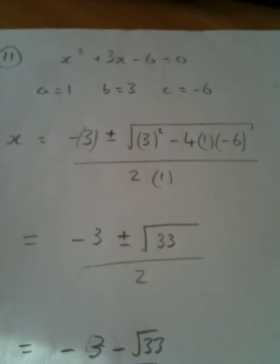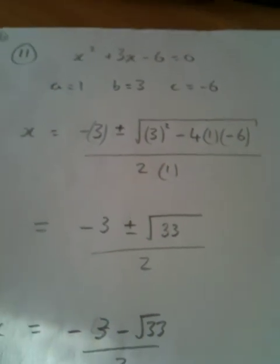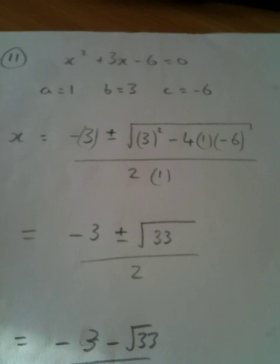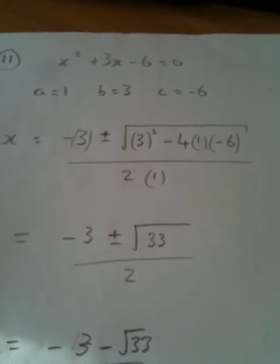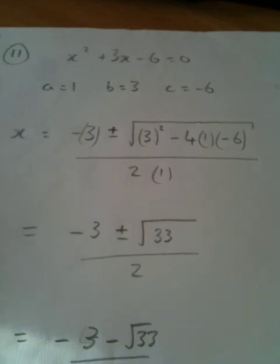Then we substitute into the quadratic formula. So we're doing there. So x equals negative 3 plus or minus the square root of 3 squared minus 4 times 1 times minus 6 all over 2 times 1.